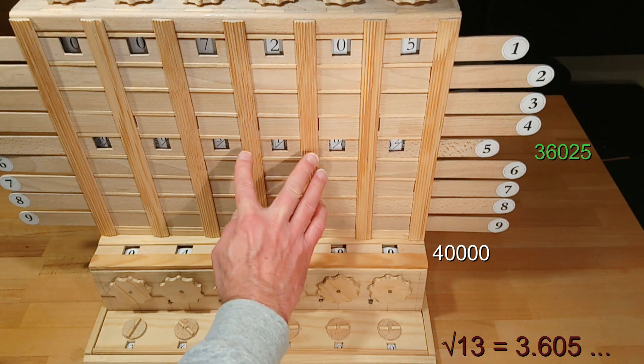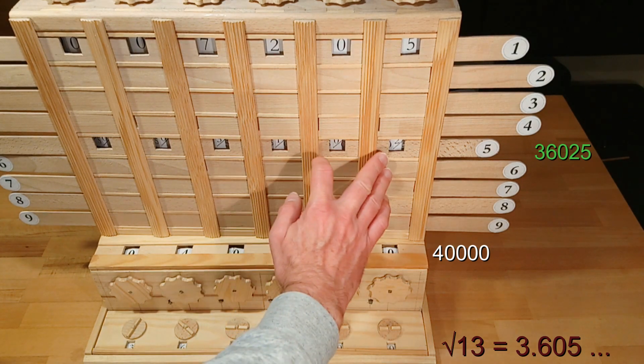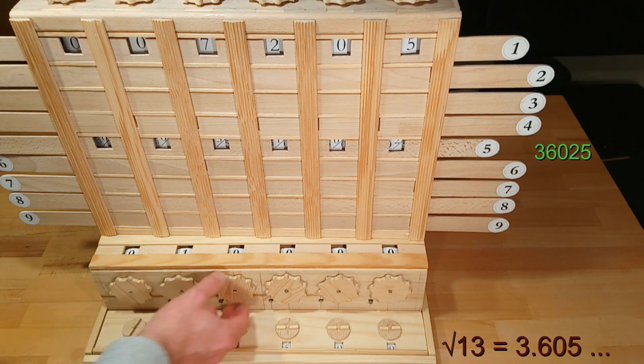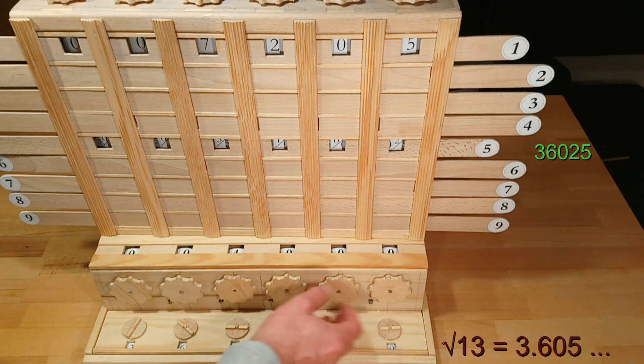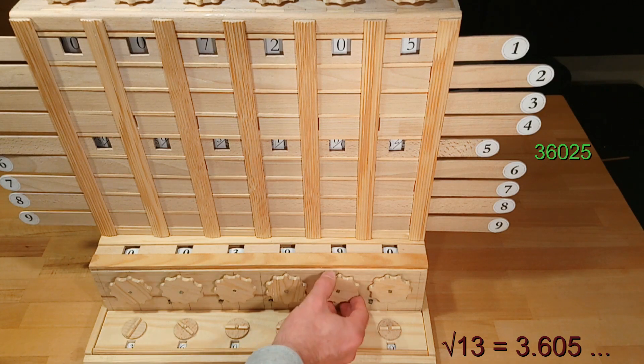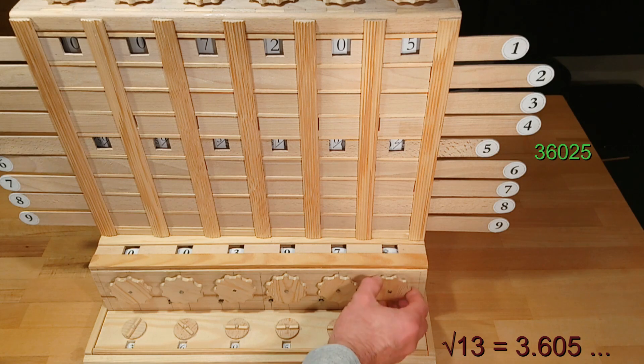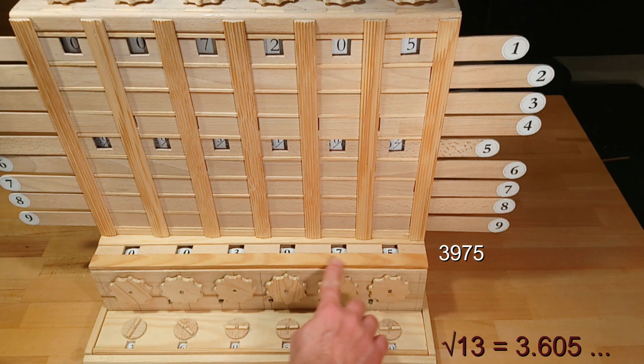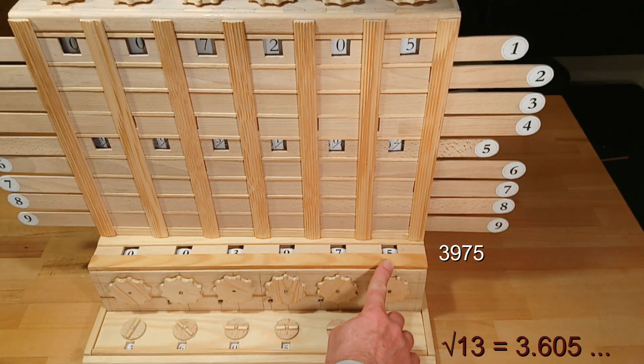Now we have to subtract 36,025 from 40,000. And there's a remainder of 3975 now.